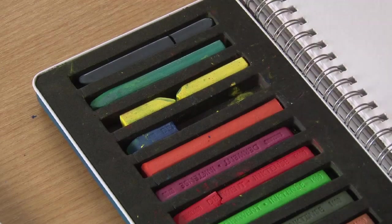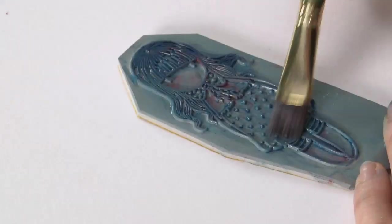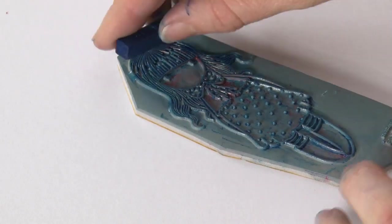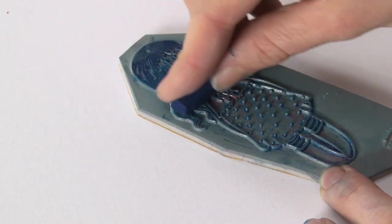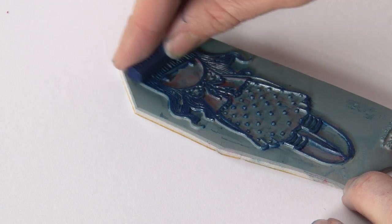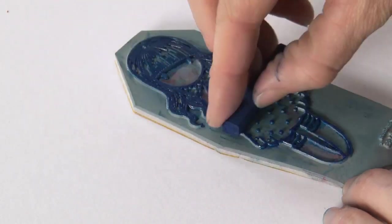All I'm going to do is take a paintbrush and wet the stamp area. I'm then going to take my inktense block and just drag the side of the block over the stamp. Really easy.